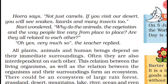Hira says: not just camels — if you visit our deserts, you will see snakes, lizards, and many insects too. (Hindi: agar tum hamare deserts mein aoge, tumhe snakes, lizards aur bahut saare insects bhi dekhne ko milenge.) Ravi wondered: why do the animals, the vegetation, and the way people live vary from place to place? Are they all related to each other?